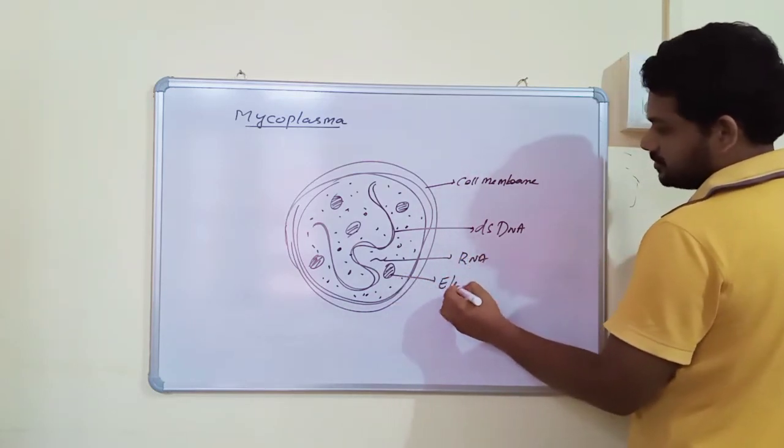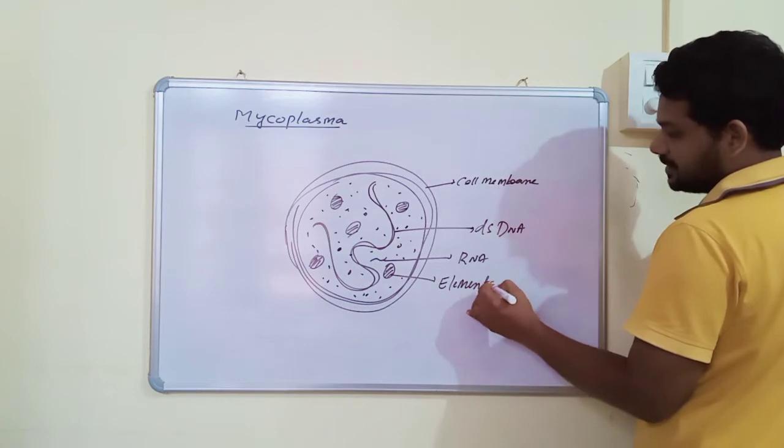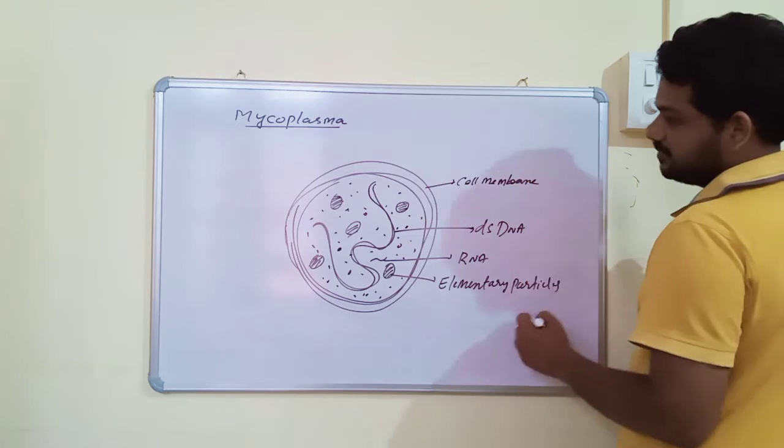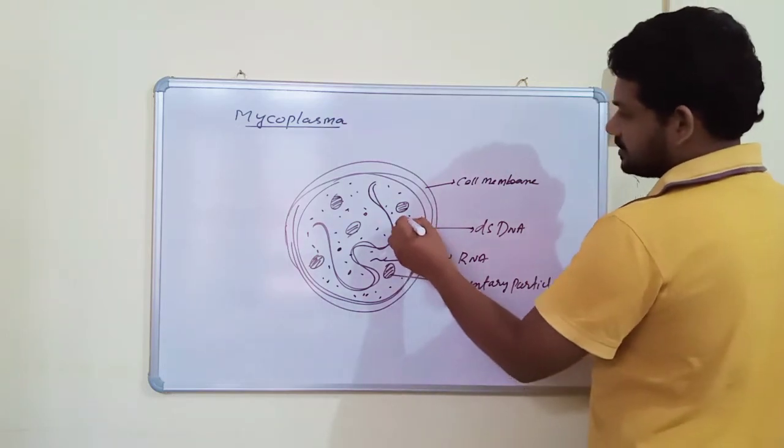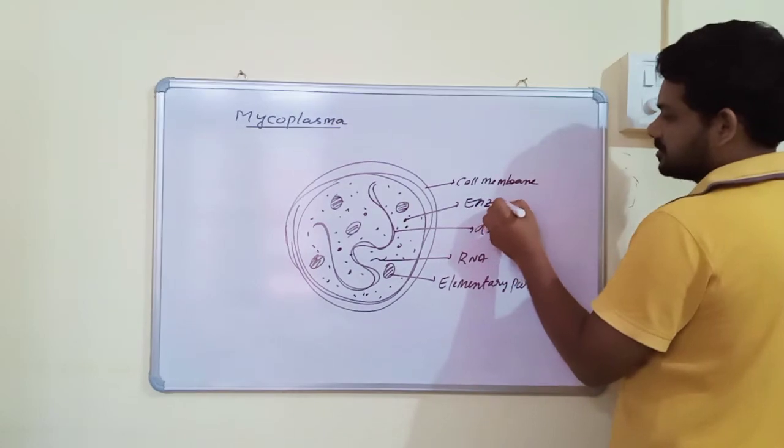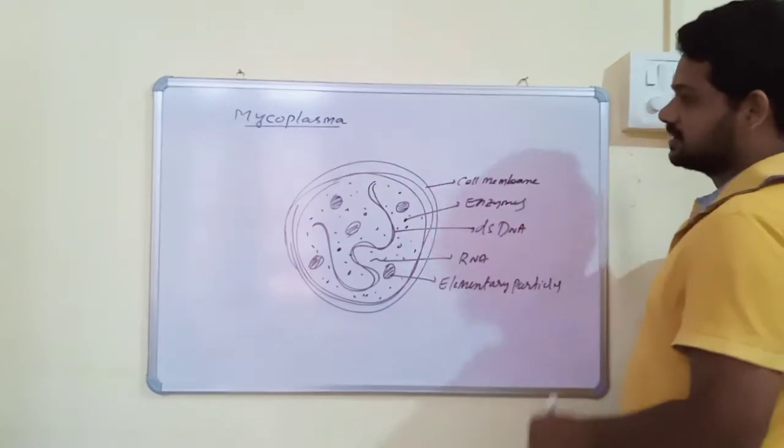And there are some elementary particles in mycoplasma. Reproduction occurs by means of elementary particles. There are some enzymes present, proteins present, and other particles also present.